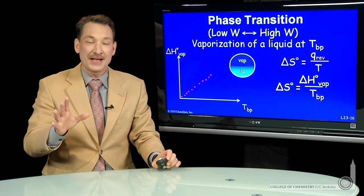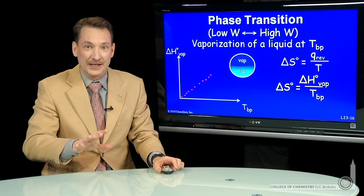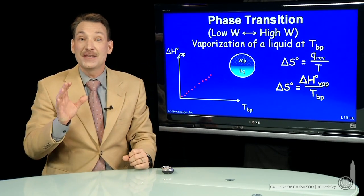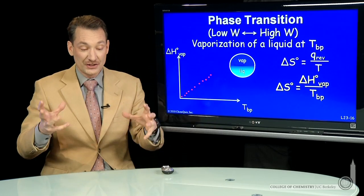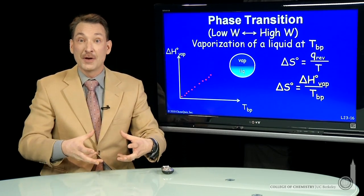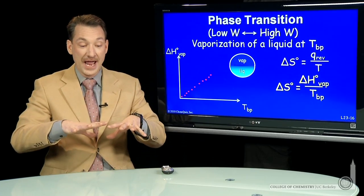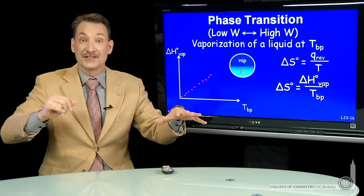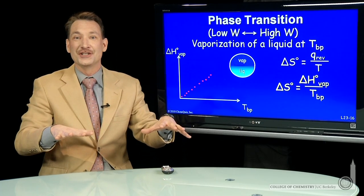You might expect that regardless of the liquid, this entropy of vaporization is going to be about the same. Because in every case, you're going from a liquid, which has relatively few microstates, to a gas, which has a vastly higher number of microstates to distribute that energy across.